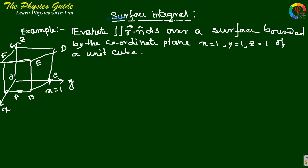I am going to solve a problem related to surface integral with the direct method. Evaluate the integral of r dot n-hat ds over the surface bounded by coordinate planes x=1, y=1, and z=1 of a unit cube. Let the cube origin be at (0,0,0) and the surfaces be labeled A, B, C, D, E, F, G, O. There will be six surfaces, and after evaluating r dot n-hat ds for each surface we add them to get the final result.